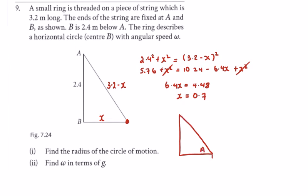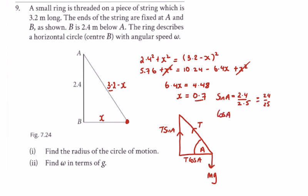For angle A in the force diagram, we have mg coming down and our force up. We have tension T in the string, giving components T sine A and T cos A. Sine A equals 2.4 over 2.5 — taking the 0.7 away from 3.2 gives a 7-24-25 triangle, so sine A is 24 over 25. Cos A is 7 over 25.